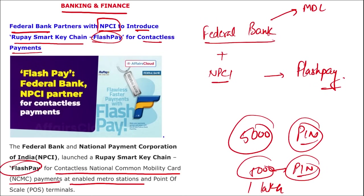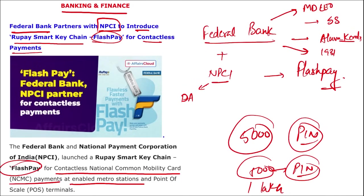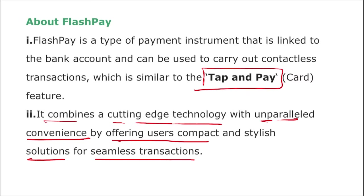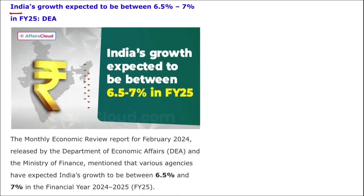Regarding Federal Bank: the Managing Director and CEO is Shyam Srinivasan, headquartered in Aluva, Kerala, established in 1931. Regarding NPCI: the CEO is Dilip Asbe, headquartered in Mumbai, Maharashtra, established in 2008.